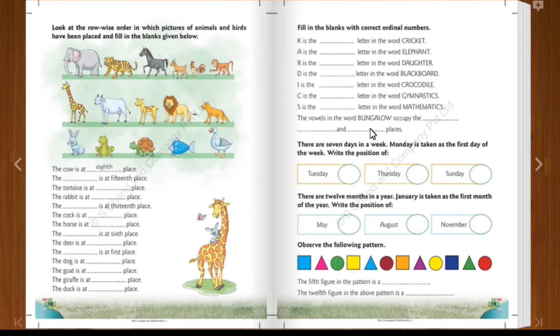The vowel in bungalow. B-U-N-G-A-L-O-W. A-E-I-O-U are the vowels. Here, 3 vowels we can say. One is U. Other is A. Other one is O. U is at 2nd place. And A is at 5th place. And O is at 7th place. Just count it and verify. Then write 2nd, 5th and 7th places.